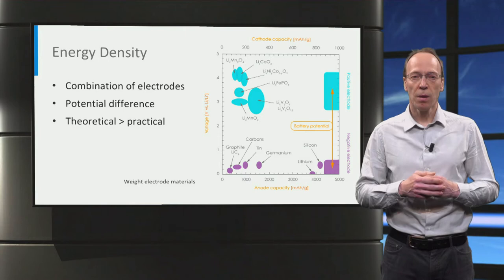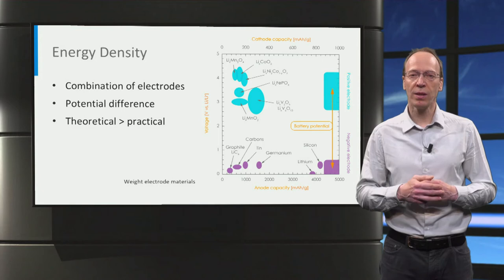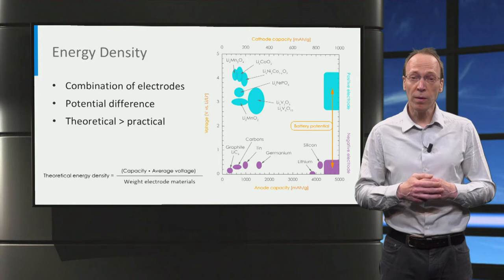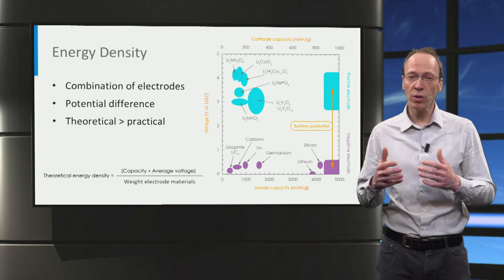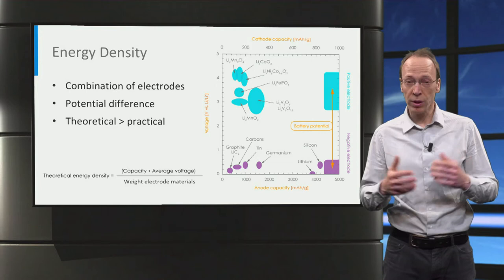Because the anode and cathode generally have a different specific capacity, the masses of the anode and cathode will be different. Remember that energy density is the capacity times the average voltage. Therefore, the theoretical energy density of a combination of the two electrodes equals the capacity times the average voltage, divided by the total mass of the two electrode materials. The practical energy density of entire batteries is much smaller, roughly around 30% of the theoretical energy density.